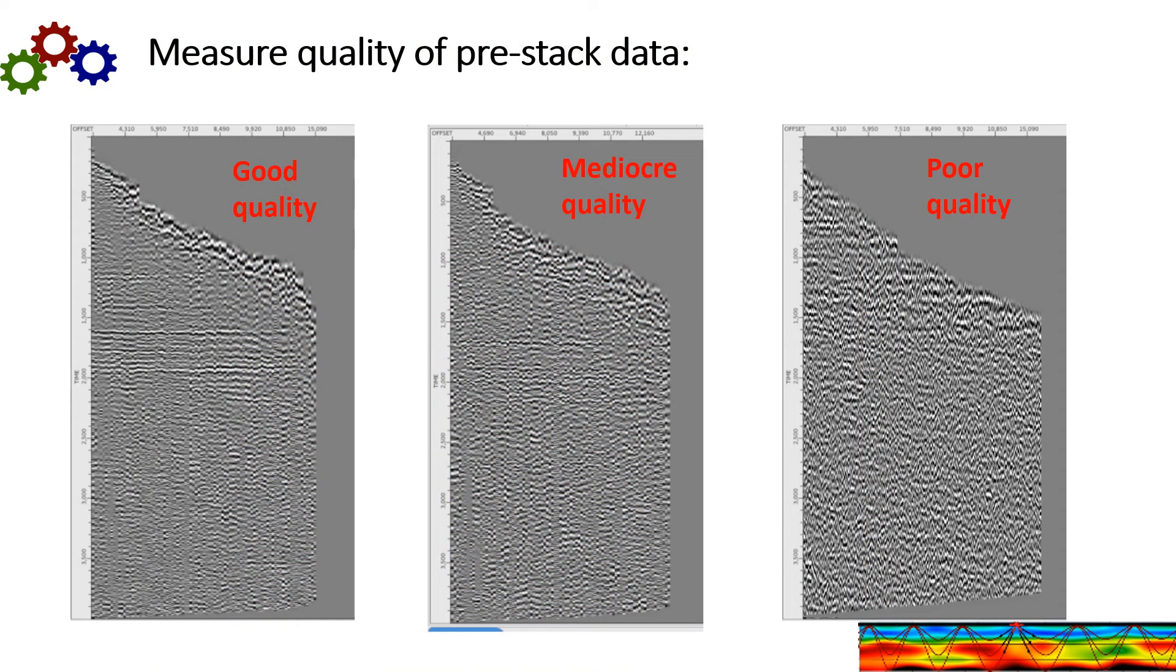And here's an example of just what I mean by different quality of signal. So you can see a good quality signal over here on the left, mediocre quality and poor quality. And these are the differences that we're seeing. And we see this on almost all data sets that we look at.